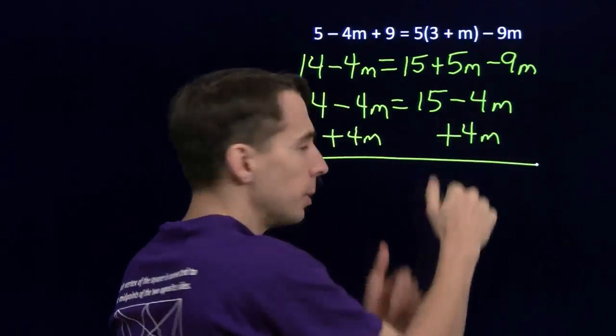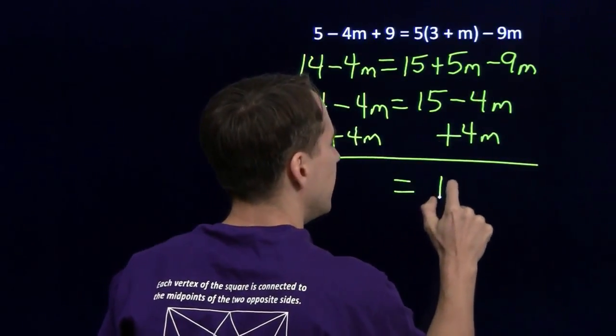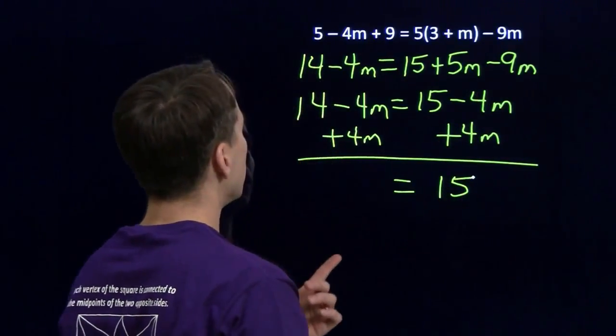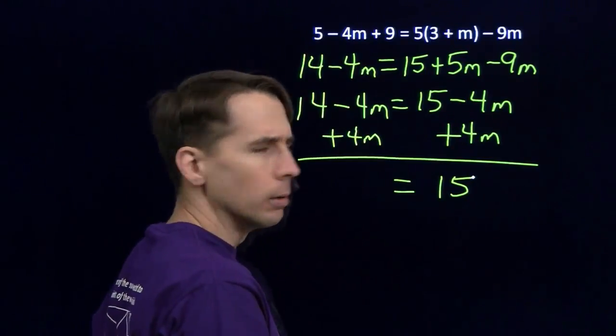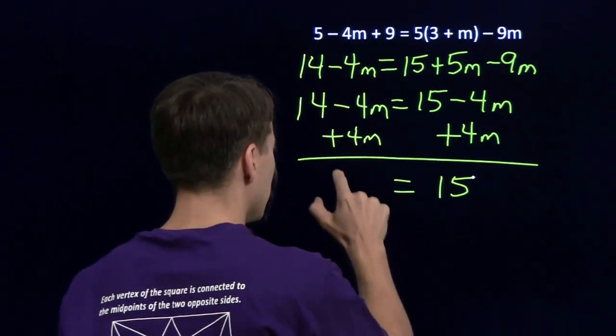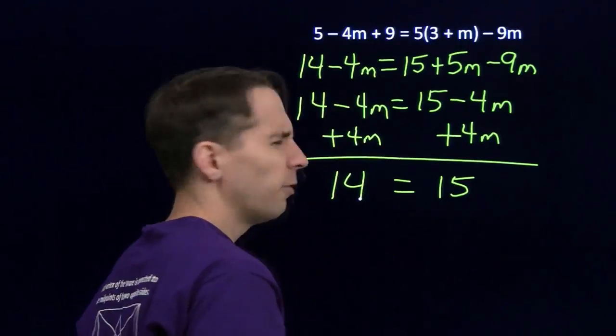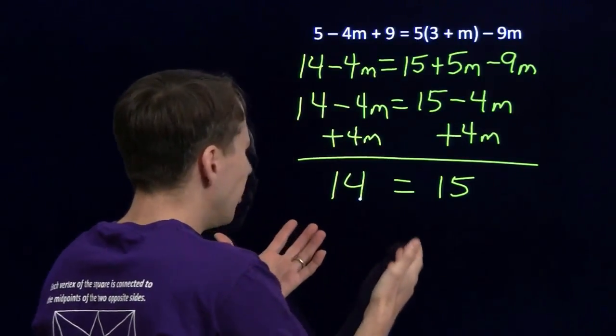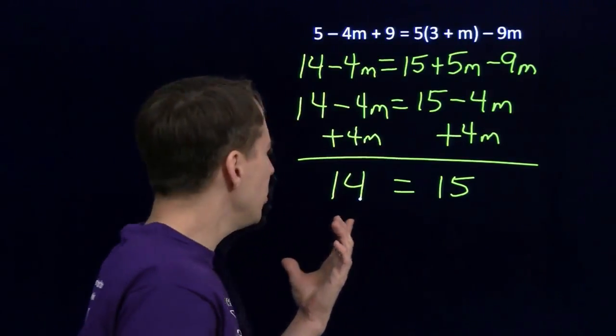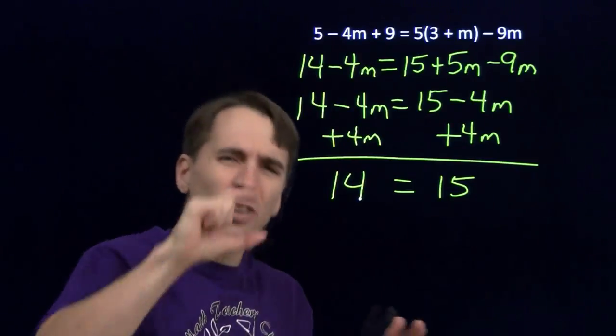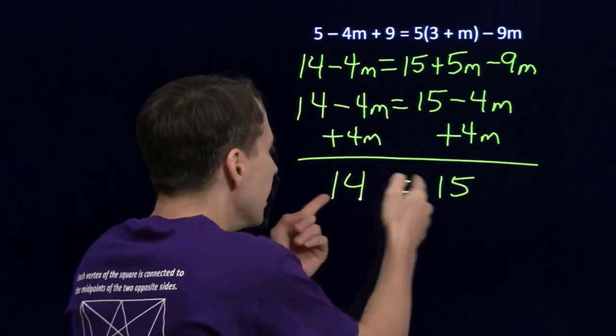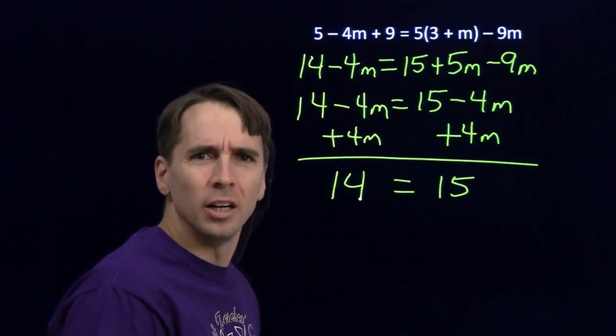So over here, of course, the minus 4m and the plus 4m cancel, and we're just left with 15. And over here, the minus 4m and the plus 4m cancel, and we're left with 14. Wait a second. 14 isn't equal to 15. No matter how large you draw the 14 or how small you draw the 15, those two aren't equal. What's going on here?